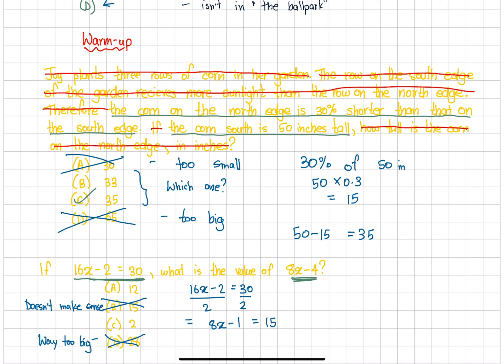We cross out 28 and 15. If you think about it, 2 is also way too small. 8x minus 1 gives us 15, hence 8x equals 16, so x equals 2. But we need to find the value of 8x minus 4, so we cross out 2 because that's a trap answer. The answer has to be A, which is 12.